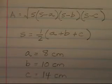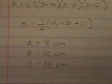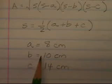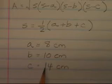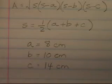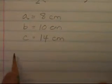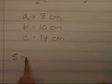So we will need to know the semi-perimeter to do this problem, so let's go ahead and compute it. The perimeter of the triangle is 8 plus 10, that's 18. 18 and 14 is 32. Half of 32 is 16, so the value of S is going to be 16.